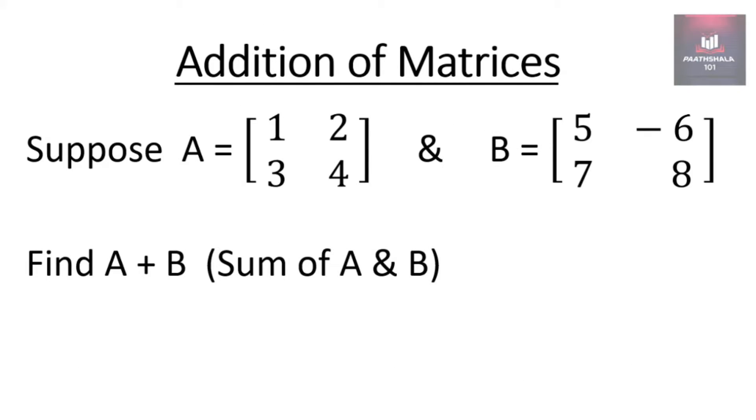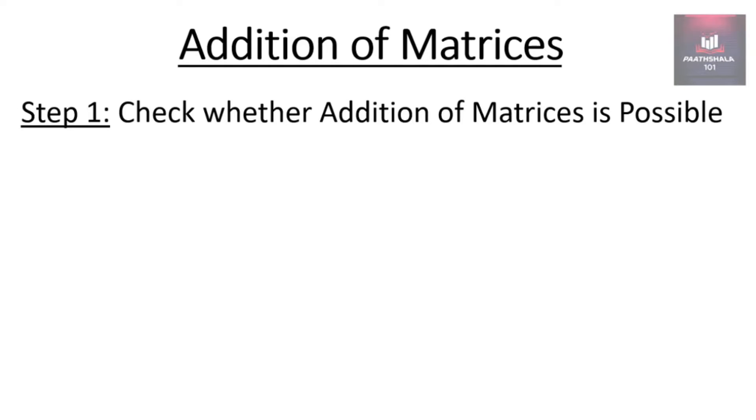Suppose there are two matrices A and B, find A plus B, that is the sum of A and B. Now step one: check whether addition is possible or not.